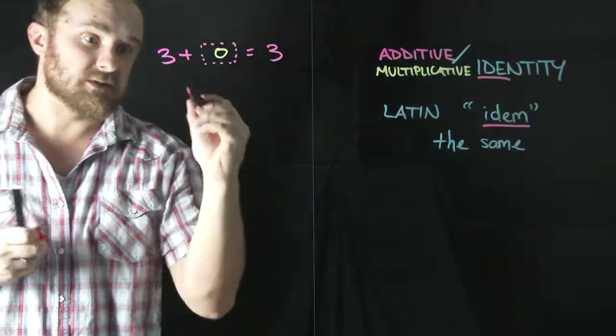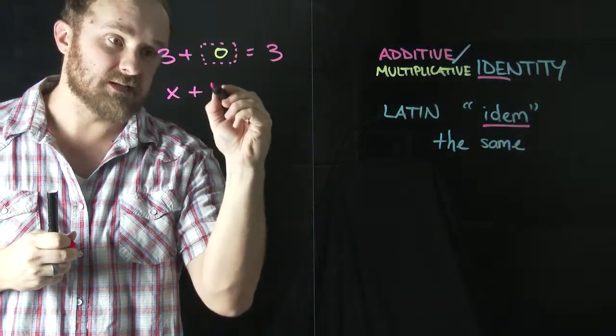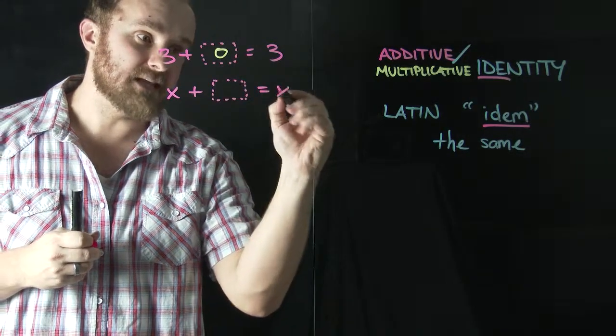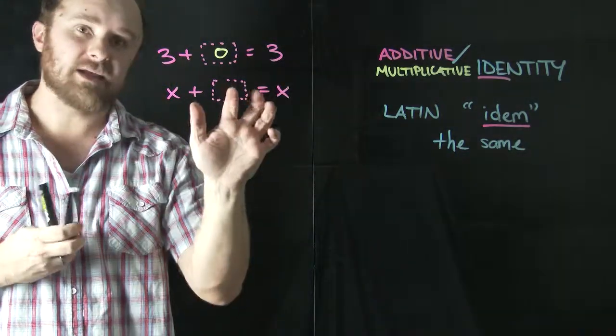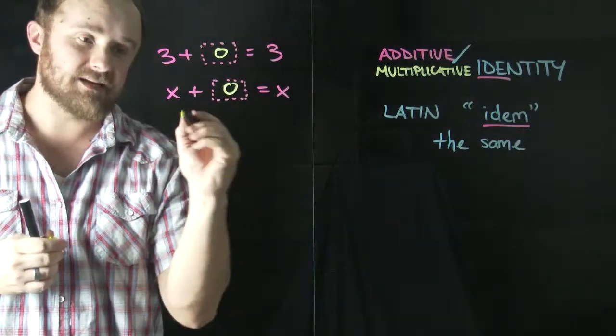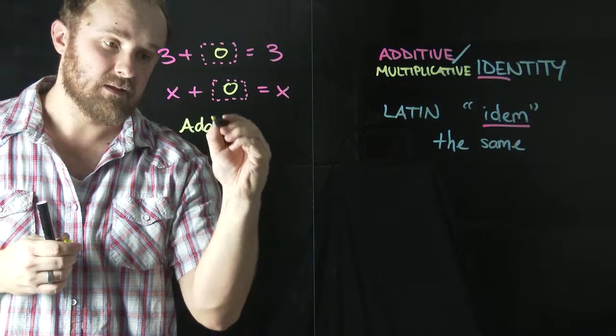And let's look at it with a variable instead of a number. So if I had X plus something, again, if I wanted this to equal just X, the only thing I could put, the only number I could put in this box would be zero. So the additive identity is zero.